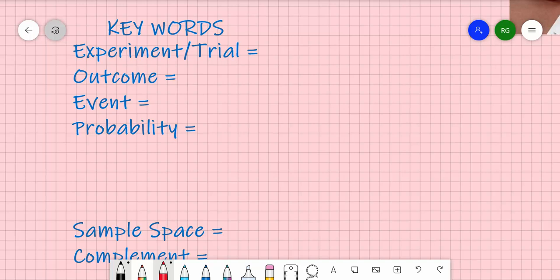The first one is the experiment or the trial. This is a situation where something is happening. It might be a coin toss, or it might be rolling a dice, or it could be spinning a spinner. We're going to record that as simply the test. The outcome is the possible result of the experiment. So we can record that as the experiment result.